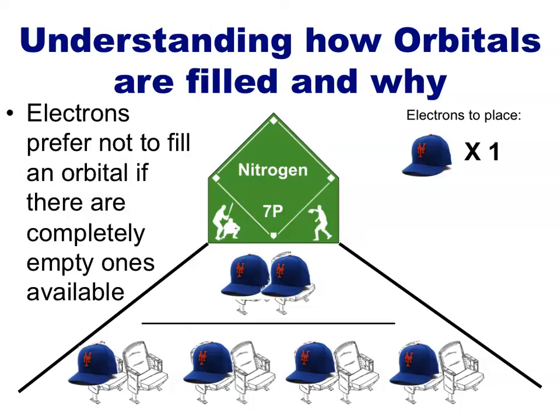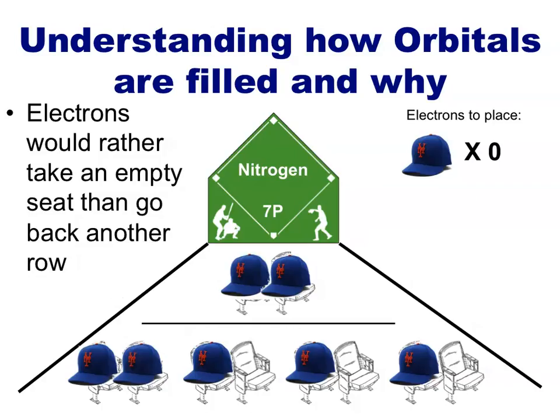Now we only have one electron that still needs a seat. The remaining electron isn't that happy about having to sit next to a stranger, but would rather do so than to sit all the way back in the third row. Therefore, it will occupy one of the orbitals in the second energy level, meaning that for nitrogen, in its outermost energy level, there is one filled orbital and three half-filled orbitals. We still have a few empty seats in these half-filled orbitals, even after placing all seven electrons that we can naturally draw to nitrogen.